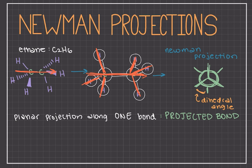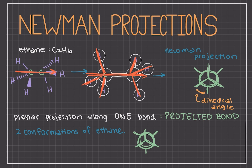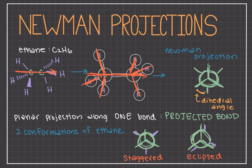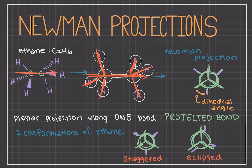With the Newman projection we can also see the dihedral angle between the atoms even better — the angle between the hydrogens on the front atom and the hydrogens on the back atom is clearly visible. There are two possible ways to draw the Newman projection of ethane, called the conformations of ethane. The first is the staggered conformation where the hydrogens are staggered from each other. The second is when the hydrogens are right in line with each other along the carbon-carbon bond — this is called the eclipsed conformation. Both conformations have different characteristics and energies.